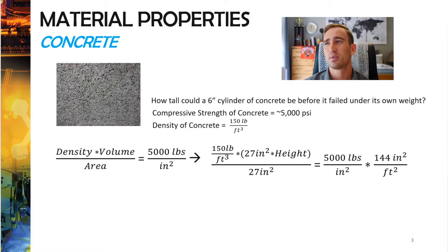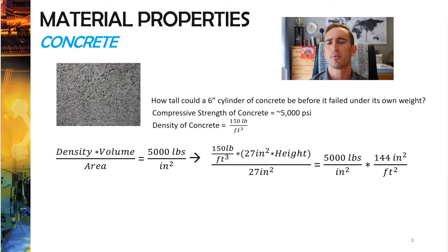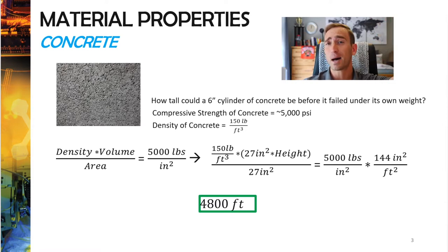On the left side we've got pounds per cubic foot times height, so we can't have pounds per square inch on the right side. We need to convert using 144 inches squared per foot squared so that we've got everything in like units. Ultimately, this tells us that concrete could stand 4800 feet on top of itself before it actually failed — that's almost one mile high.